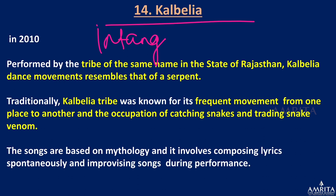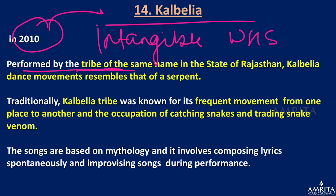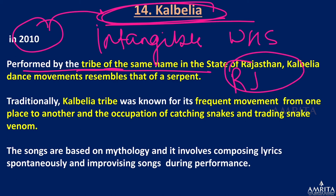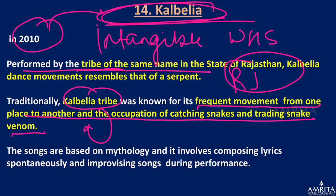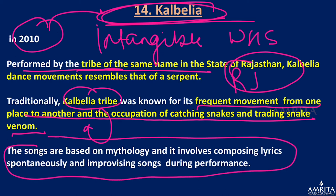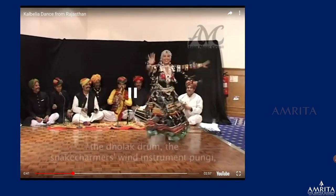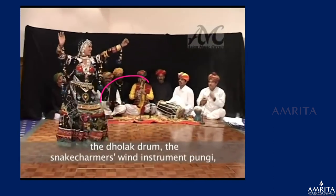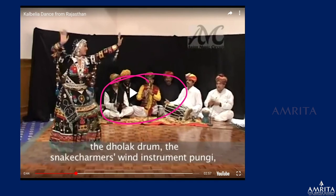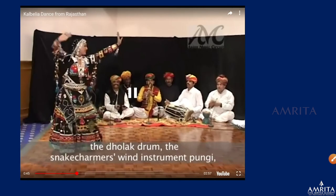Next is the Kalbelia dance, part of the UNESCO Intangible Cultural Heritage list since 2010. It is performed by the Kalbelia tribe of Rajasthan, known for frequent movement from place to place and for catching snakes and trading snake venom. The songs are based on mythology, and performers compose lyrics spontaneously and improvise songs during the performance. The dance is characterized by very quick and swift movements.